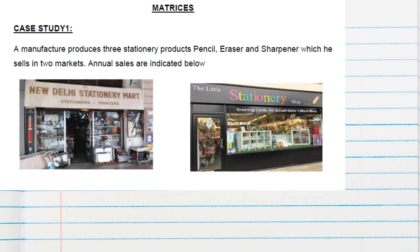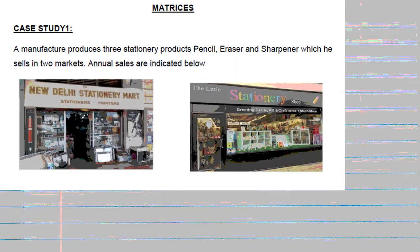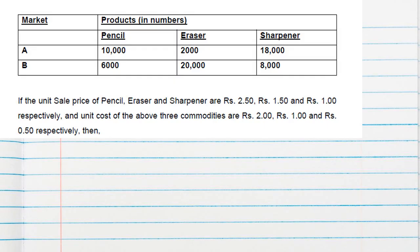The question is: a manufacturer produces three stationery products — pencil, eraser, and sharpener — which he sells in two markets. Annual sales are indicated in tabular form. The products are given in numbers for two markets, A and B. Market A has 10,000 pencils and Market B has 6,000, and so on as given in the table.